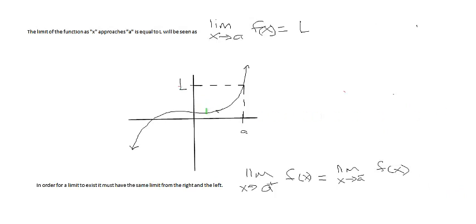Here, if you can see my green mark as I'm running up towards a on this function, I'm getting close to L. As I get infinitely close to a, I'm going to get really close to L from both sides in this case.